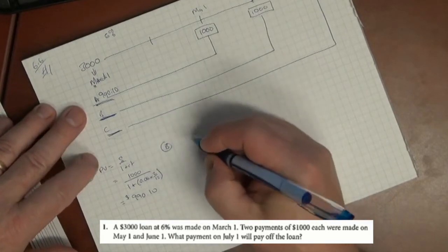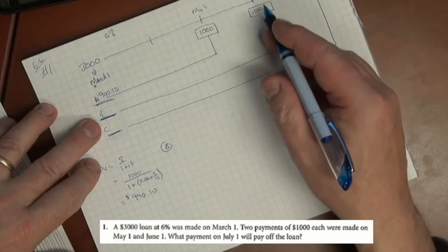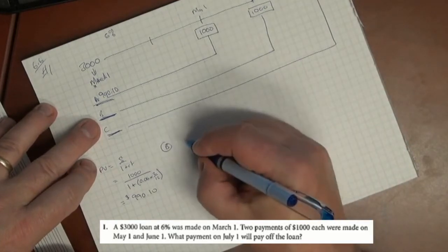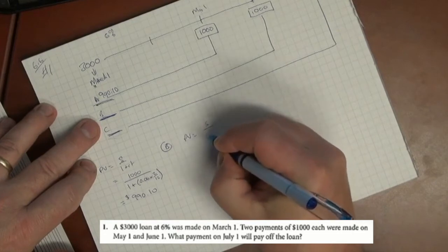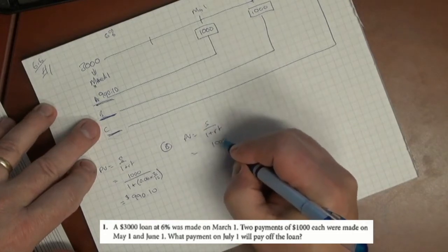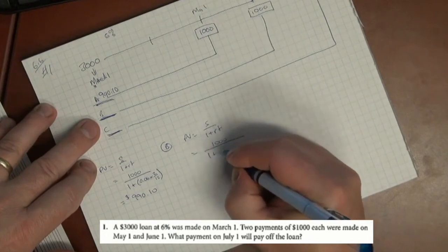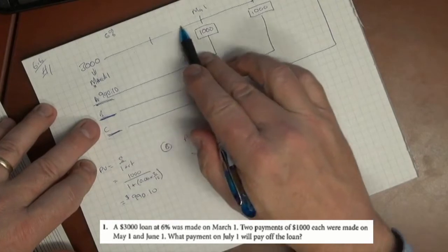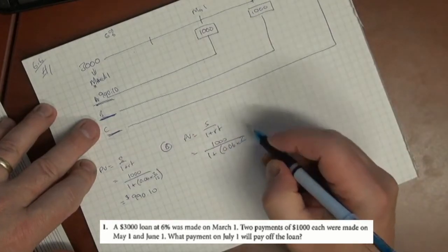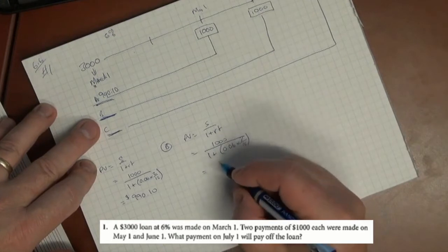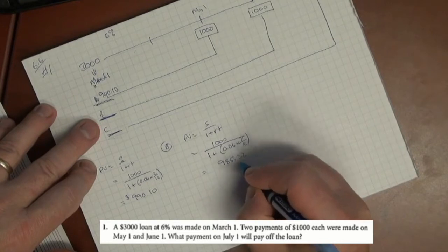For B, we're taking the present value of the second payment made on June 1st. Using the same formula, it's $1000 divided by 1 plus 0.06 times 3 months - 3 over 12. We do that and we get $985.22.